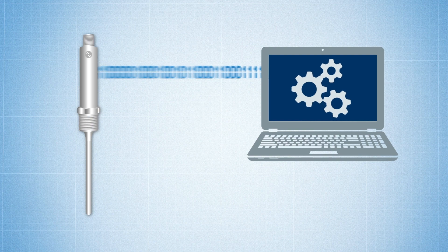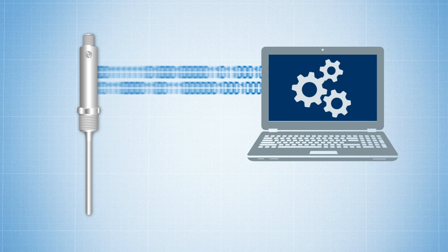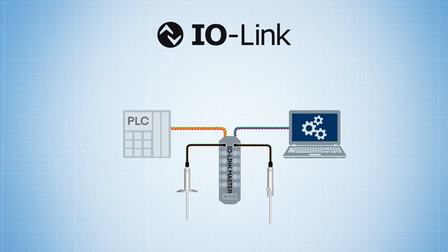But what if you could have a fully digital, point-to-point, bi-directional sensor that not only transmits data to the system, but can receive data as well? You can with IO-Link technology.